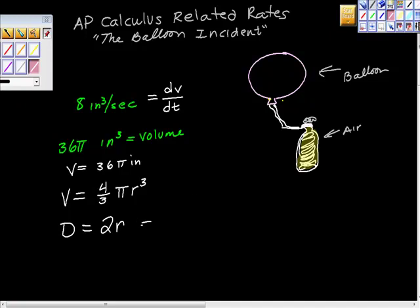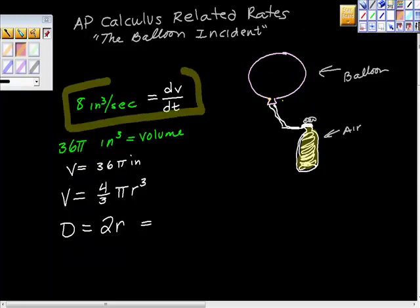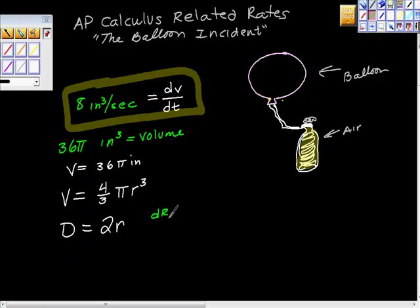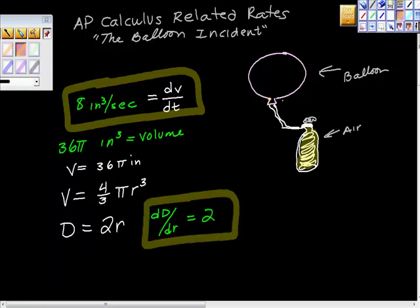I'm going to gather these things neatly. I have a rate right here, and I'm going to get another rate right here. So I'm going to take the derivative of diameter with respect to radius. The first derivative of D = 2r is just 2. So I'm going to gather that right here.